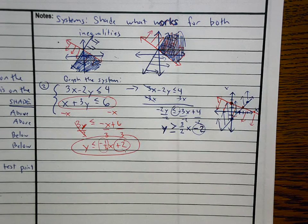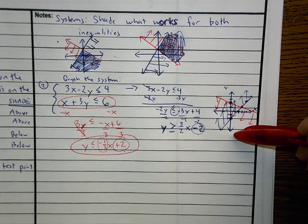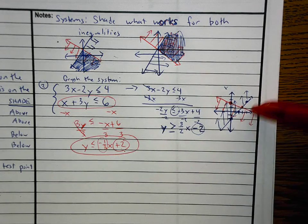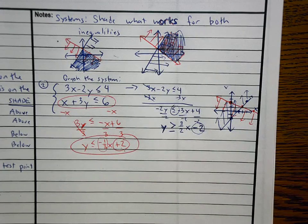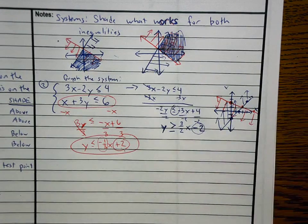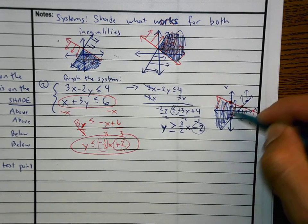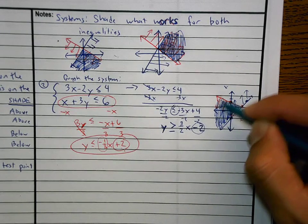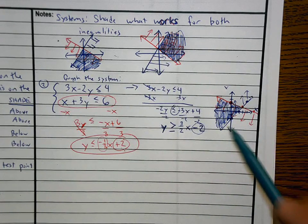You can shade what works for both. Do you know which one works for both this time? Is it the top, is it the bottom, is it the right, or is it the left? There's only one answer that works. Left. If you said left you are correct. This is what side we should be shading, right here. That's our final answer. What does that mean? All the solutions are in that shaded part.